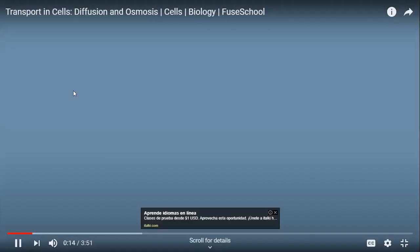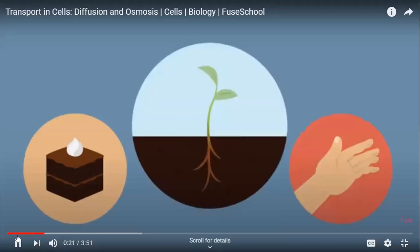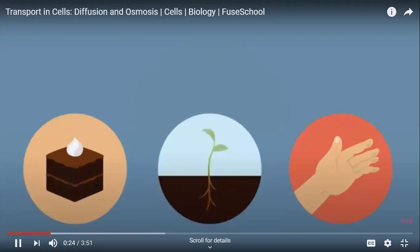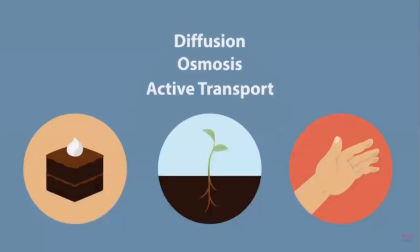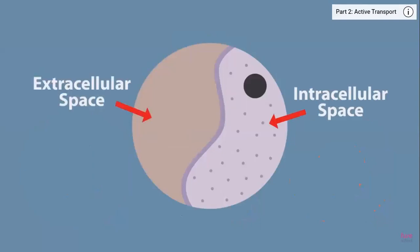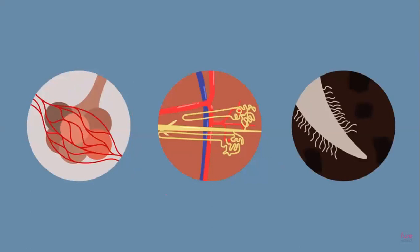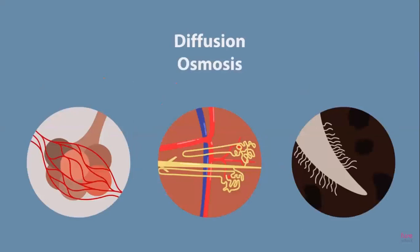Can you smell that delicious cake? Have you ever wondered why your fingers prune in water, or how plants manage to take up nutrients from the soil? All of these things require the movement of substances by either diffusion, osmosis, or active transport. In this two-part series, we're going to discover how cells take in useful substances and remove waste using these three methods of transport. The exchange of materials occurs between cells and their environment across the cell membrane.